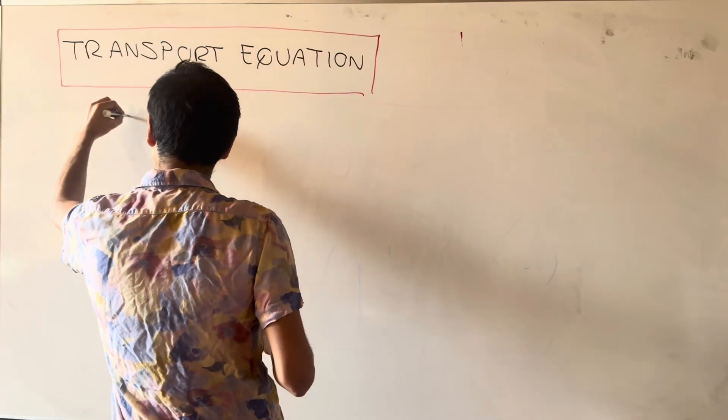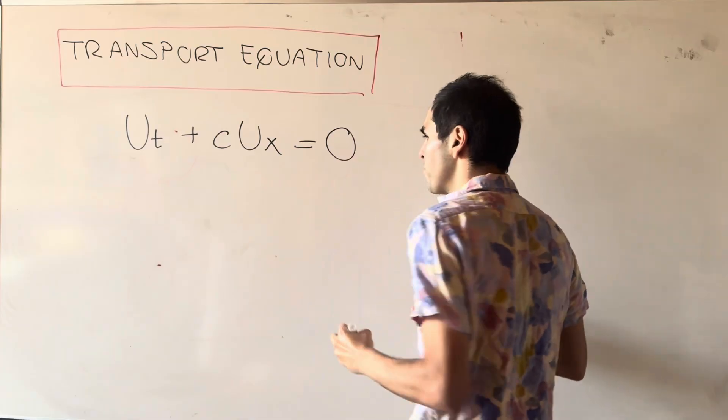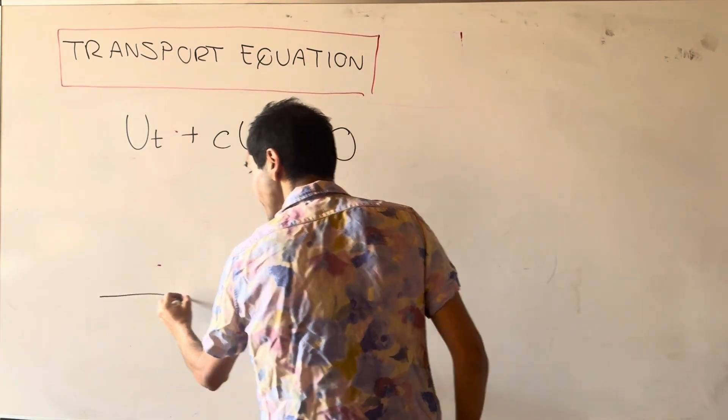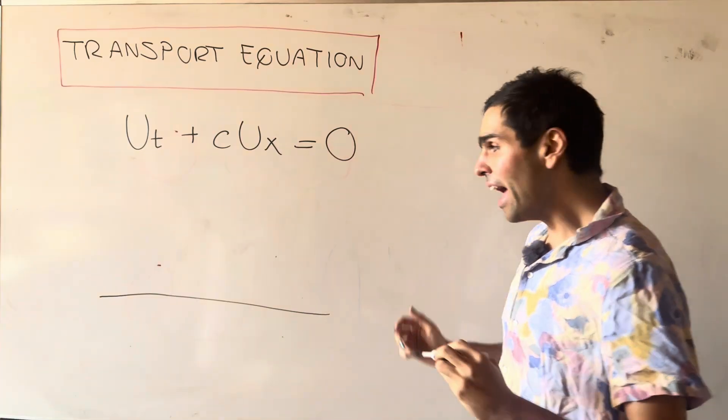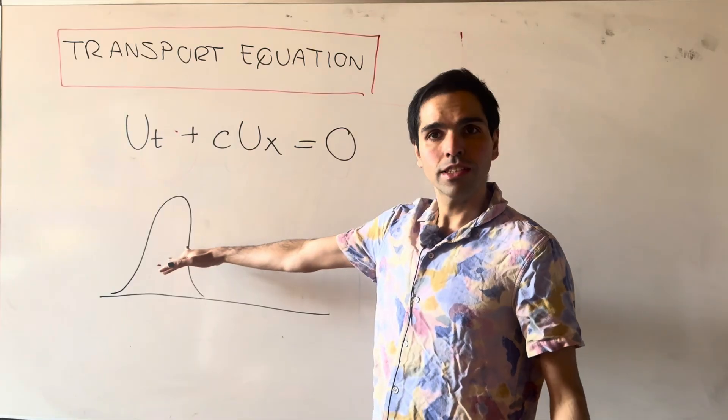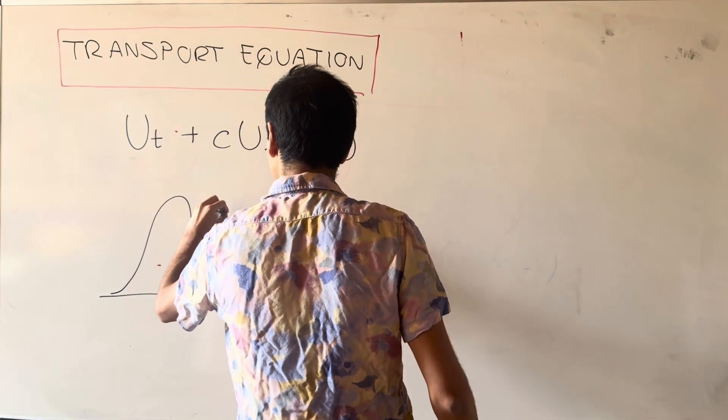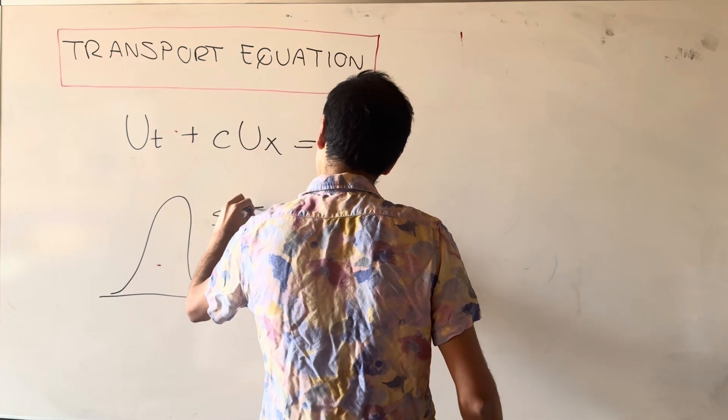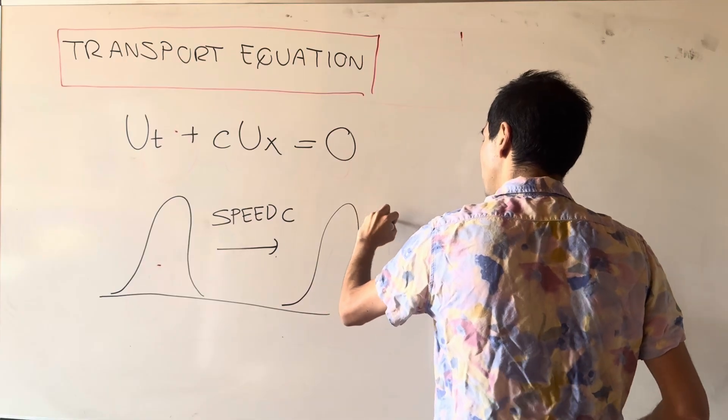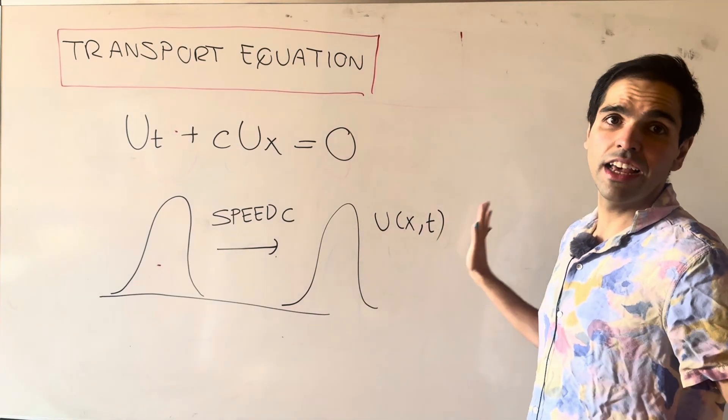Namely, the transport equation is ut plus c ux equals 0, and what it represents is the density of a particle as it is transported to the right at speed c. In other words, if you start with a blob and that blob moves to the right at speed c, then the resulting density is precisely u of xt, where x is a position and t is a time.